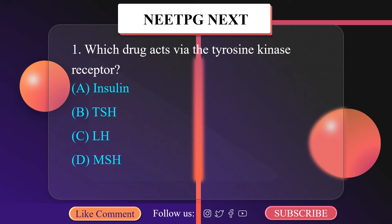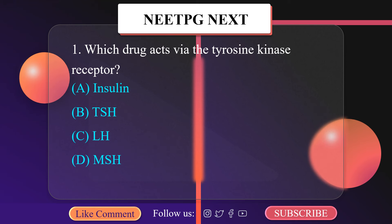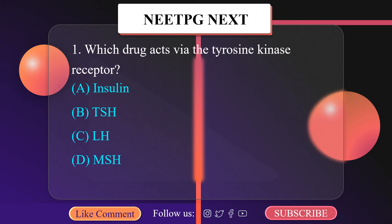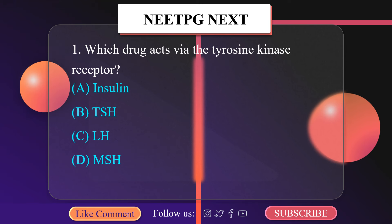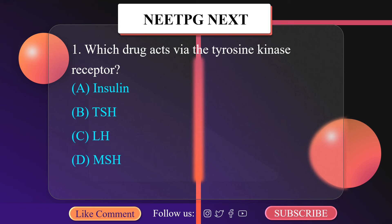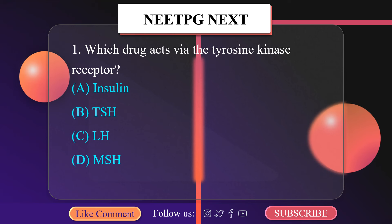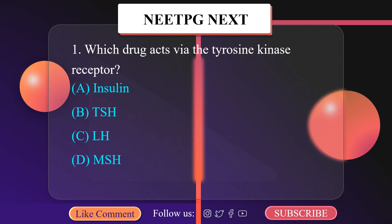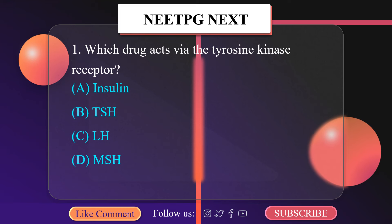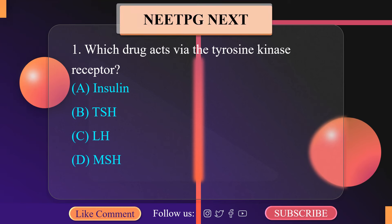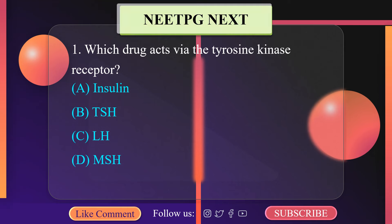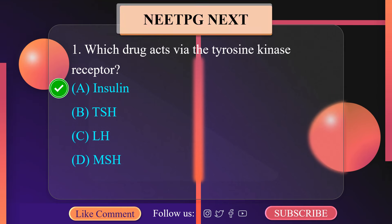This RTK is a hetero-tetrameric glycoprotein. Tetrameric means 4 subunits — consisting of 2 extracellular alpha and 2 transmembrane beta subunits, all linked together by disulfide bonds. So the correct option here is Insulin.